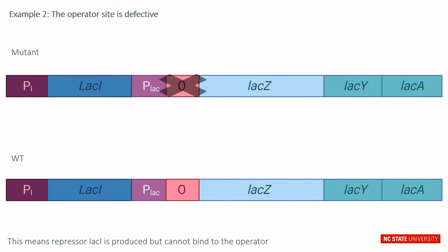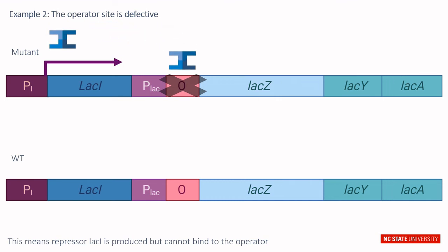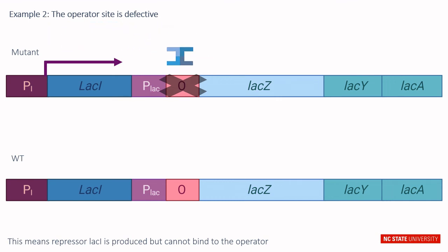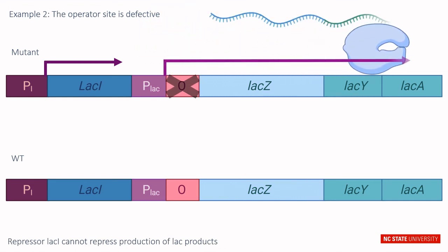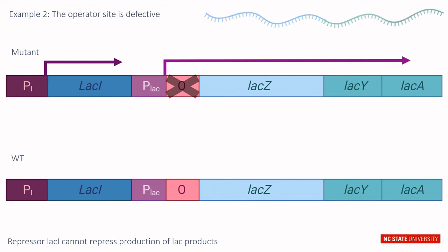In the second example, the operator site is defective. This means that repressor lac I is produced, but it cannot bind the operator, and therefore lac I cannot repress production of lac products. This again will allow for constitutive expression of the lac operon.